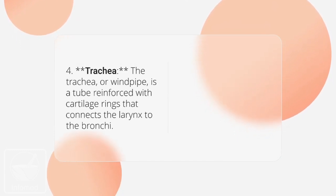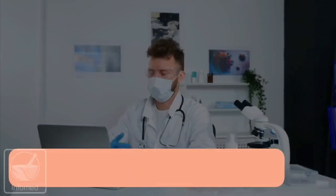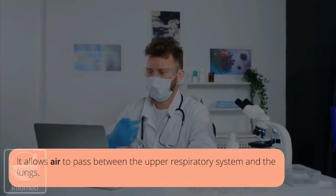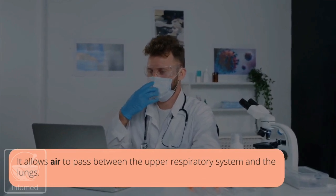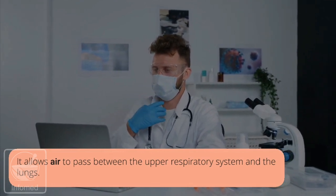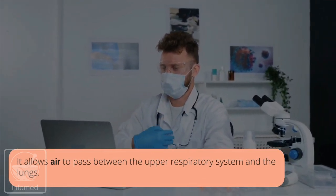Trachea: the trachea, or windpipe, is a tube reinforced with cartilage rings that connects the larynx to the bronchi. It allows air to pass between the upper respiratory system and the lungs.